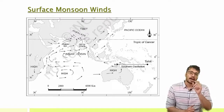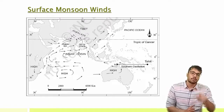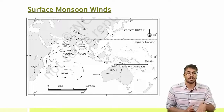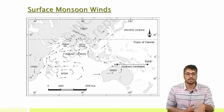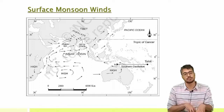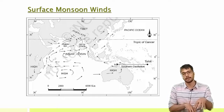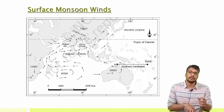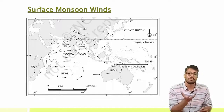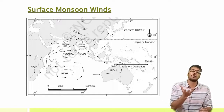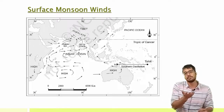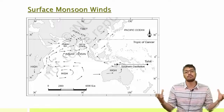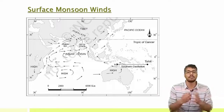Since the ITCZ is now at the Tropic of Cancer, the intensity of the sun is much greater in that region. There is direct sunlight being experienced there. As a result, a strong low pressure zone develops because of the high temperature — high temperature means low pressure. This low pressure will attract the surrounding high pressure winds.